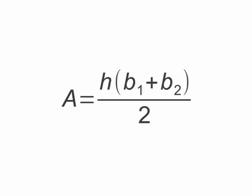To find the area of a trapezoid, add the bases together and multiply the sum by the height, then divide that number by 2.